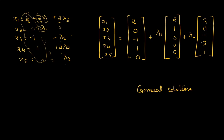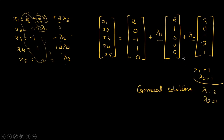This is called the general solution because λ₁ and λ₂ can take any real number as their values. For example, substituting λ₁ = 1 and λ₂ = 1 gives one solution, and substituting λ₁ = 2 and λ₂ = 1 gives another solution. We can assign infinitely many values for λ₁ and λ₂, giving infinitely many solutions for this system of linear equations.